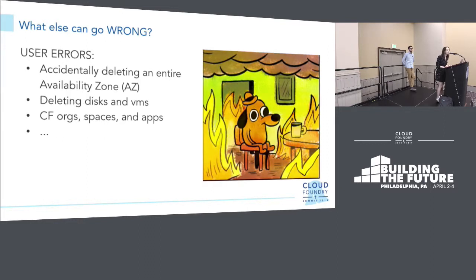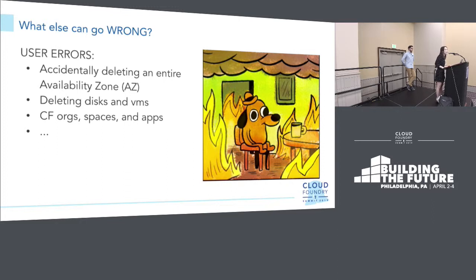Let's not forget about user errors. There are loads of things that operators and application developers can accidentally delete — things like availability zones, which is really scary, or deleting VMs and disks they shouldn't have. Given the right privileges, application developers can accidentally delete mission-critical apps or CF orgs and spaces as well.